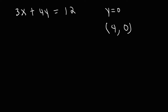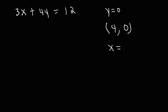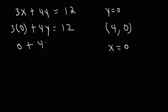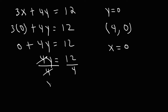Now in order to find the y-intercept we need to replace x with 0 and solve for y. So it's going to be 3 times 0 plus 4y is equal to 12. 4y plus 0 is just 4y. Now to get y by itself we need to divide both sides by 4. 12 divided by 4 is 3.